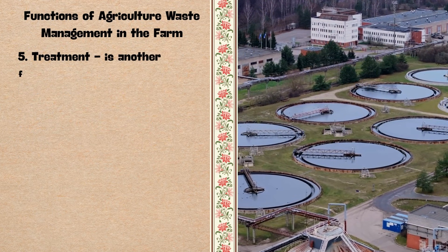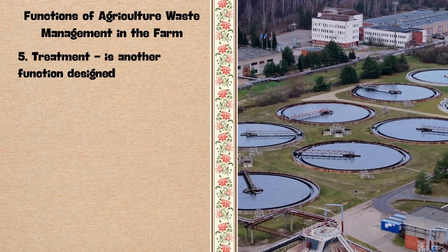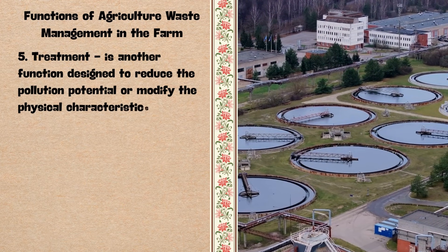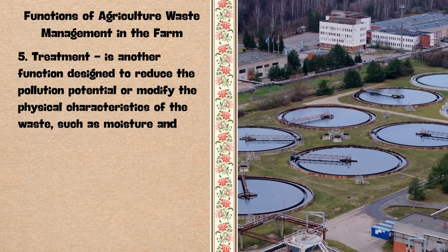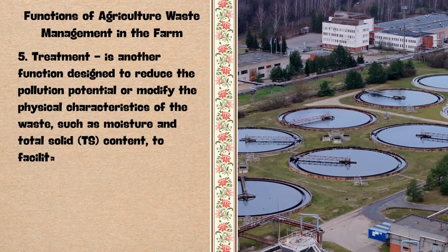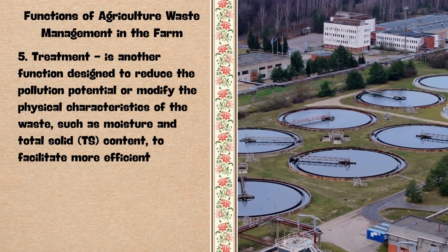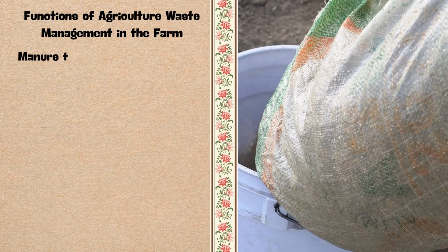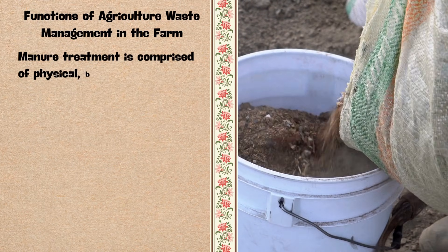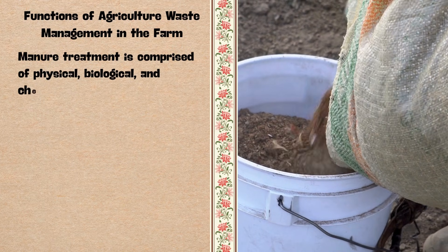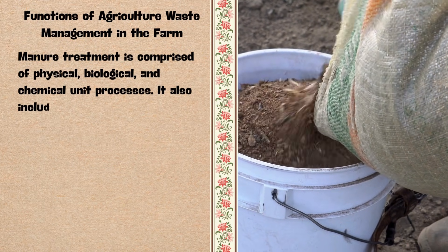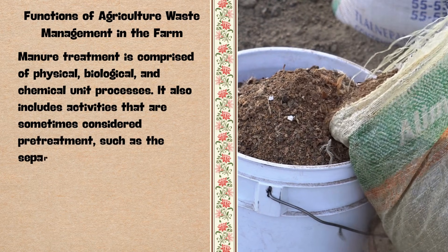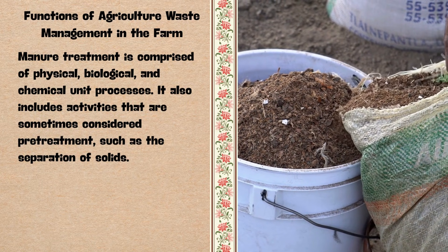5. Treatment — it is a function designed to reduce the pollution potential or modify the physical characteristics of the waste, such as moisture and total solids (TS) content, to facilitate more efficient and effective handling. Manure treatment is comprised of physical, biological, and chemical unit processes. It also includes activities sometimes considered pre-treatment, such as the separation of solids.